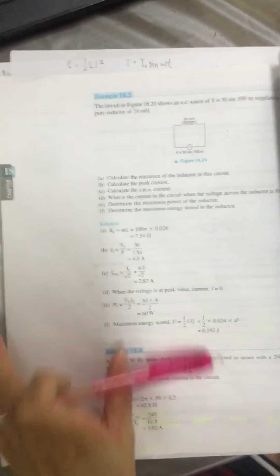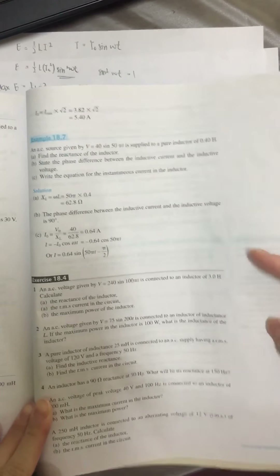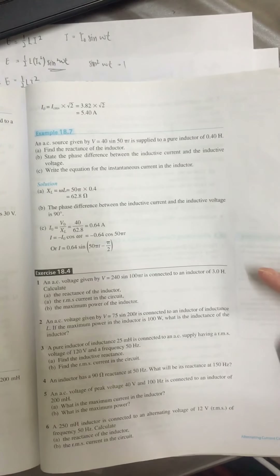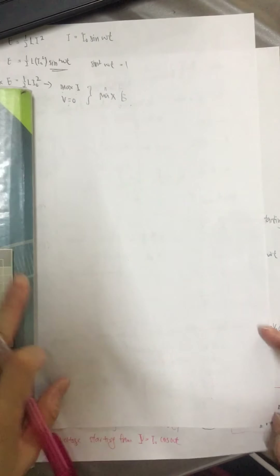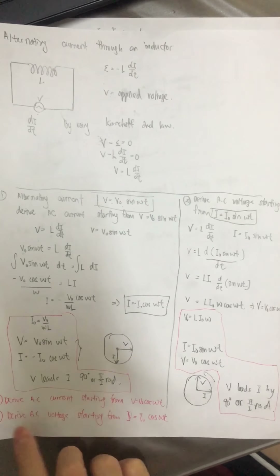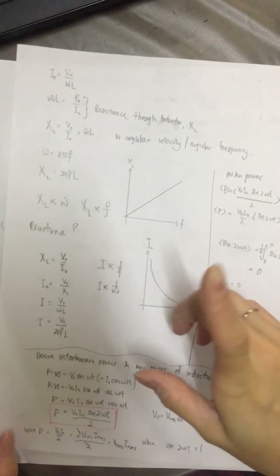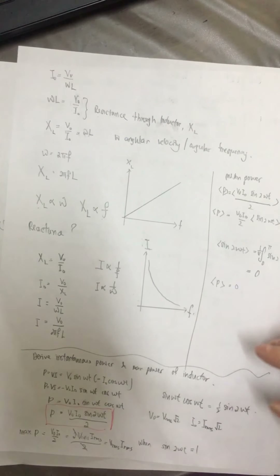That's it for today. We have finished subtopic 18.2. Remember to complete exercise 18.4 on page 301. Also, don't forget to derive AC current starting from V equal to V₀ cos ωt, and derive AC voltage starting from I equal to I₀ cos ωt. Those are two homeworks. If you have any questions please ask. Remember to like and subscribe. See you tomorrow.